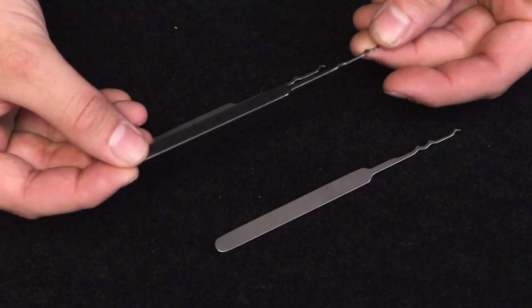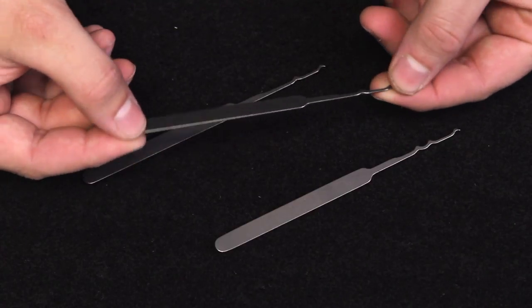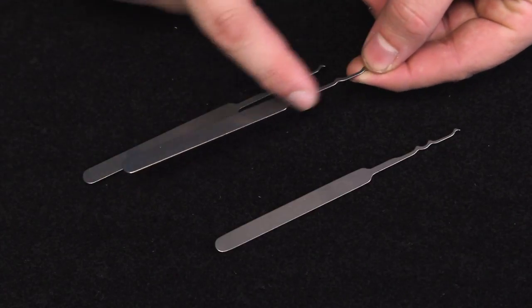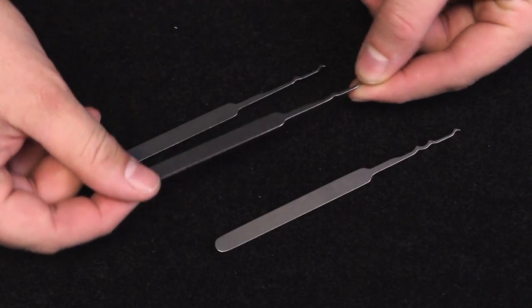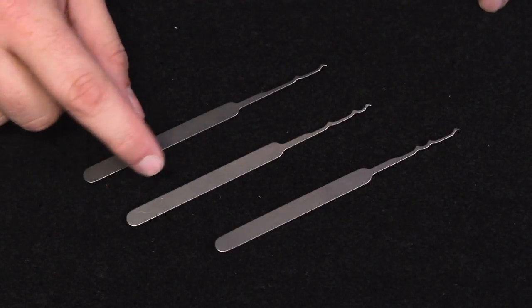A couple quick final notes on the Bogota Titanium Flats 3-Piece Expansion Toolset. These are made in the USA, and they measure 4 and 3 quarter inches long, with the whole set weighing in at only .3 ounces.